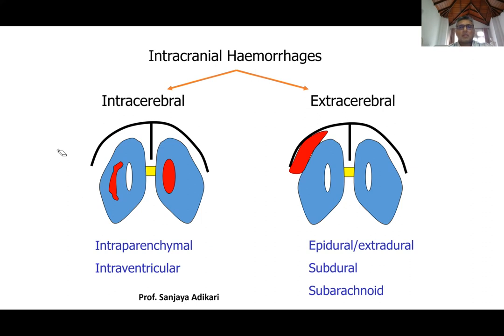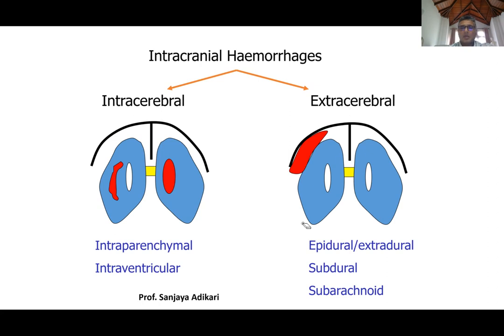Regarding extra-cerebral hemorrhages: from here onwards, when we say intracranial hemorrhage, we will be referring to intracranial extra-cerebral hemorrhages. These can be of three main types, depending on the meningeal spaces: epidural or extradural space, subdural space, and subarachnoid space. Bleeding can only happen into a space that is already available or a potential space.